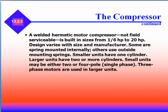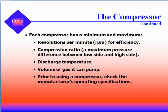Some compressors are spring mounted internally; others use outside mounted springs. Smaller units have one cylinder, larger units have two or more cylinders. Small units can be two or four pole single phase, while three-phase motors are used in larger units. Each compressor has a maximum and minimum RPM for efficiency.